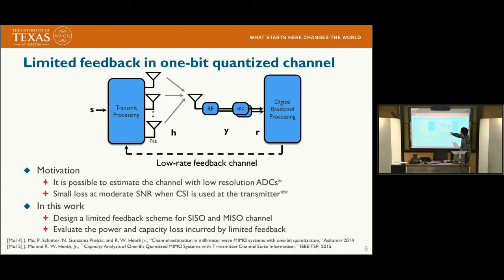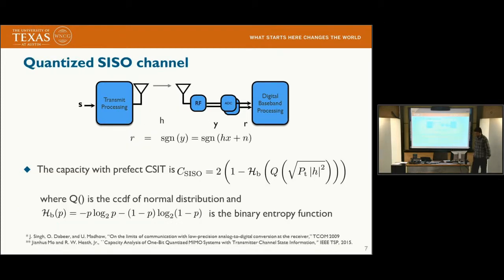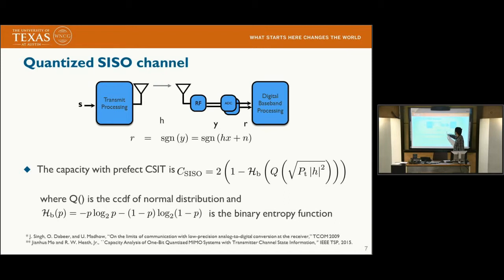Our system model considers a SISO or MISO channel with a single antenna receiver. The receiver has an RF chain and a pair of ADCs to quantize the real and imaginary parts of the received signal, followed by digital baseband processing. The receiver estimates the channel and feeds back some bits based on the estimated channel to the transmitter. The mathematical model is: H is the channel, X is the transmit signal, N is noise, and the quantization applies the sign function SIN to the real and imaginary parts.